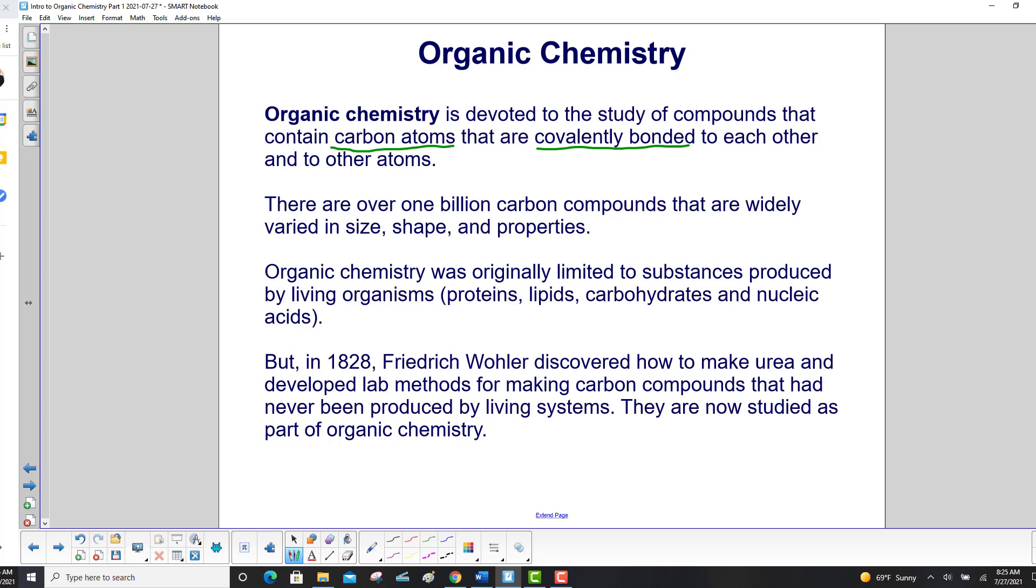Organic chemistry was originally limited to substances produced by living organisms, things like proteins, lipids, carbohydrates, and nucleic acids. But in 1828, Friedrich Wohler discovered how to make urea and developed lab methods for making carbon compounds that had never been produced by living systems. They are now studied as part of organic chemistry.